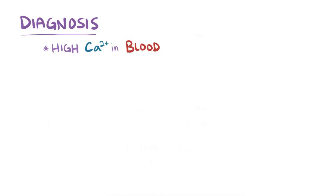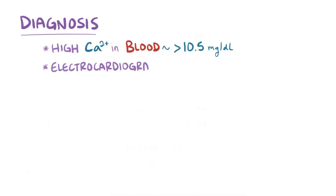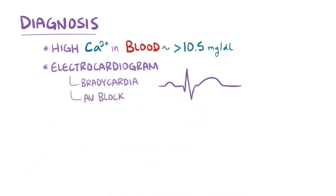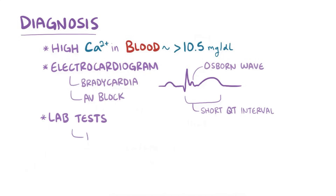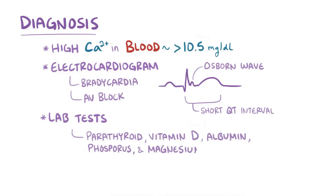Hypercalcemia is diagnosed based on high levels of calcium in the blood, generally above 10.5 mg per deciliter. An electrocardiogram might show changes like bradycardia, AV block, shortening of the QT interval, and sometimes in the precordial leads the appearance of an Osborne wave. To identify the cause, lab tests are typically done, looking at parathyroid hormone, vitamin D, albumin, phosphorus, and magnesium levels.